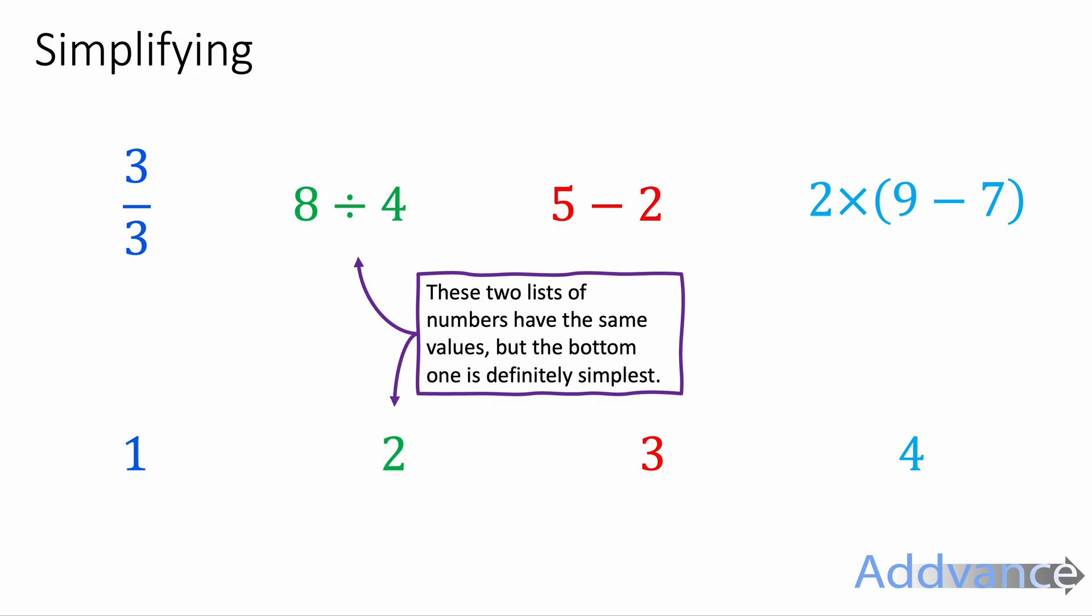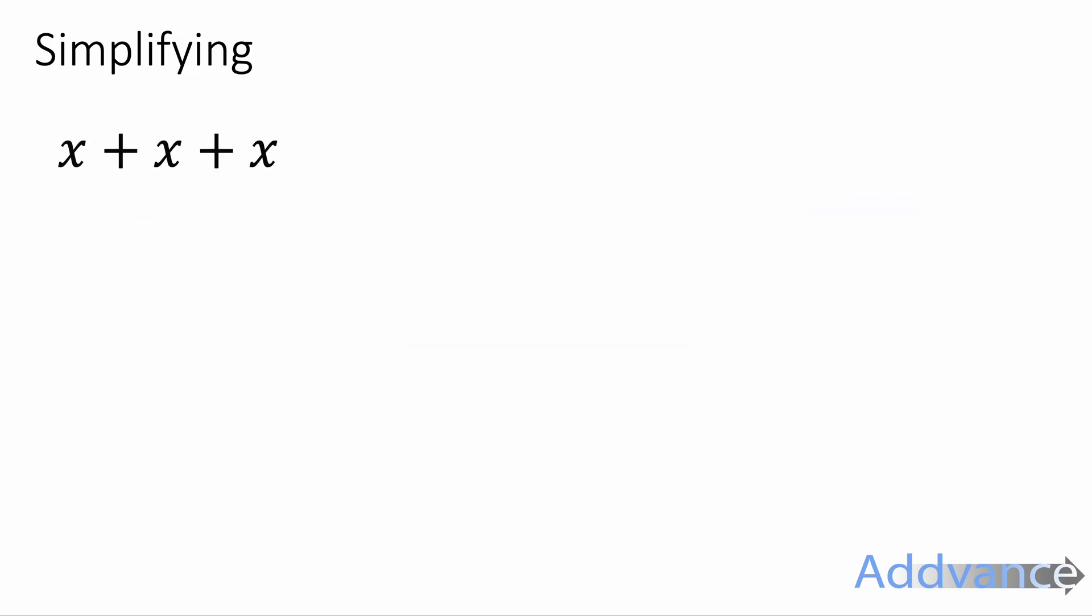We're going to be doing the exact same thing with algebra today. So we'll start with x plus x plus x. When you're adding three x's together, that's the same as three times x, written as 3x. In algebra we rarely write the times sign. Now 2a plus 5a minus 3a. Well, 2a plus 5a is 7a, then we subtract 3a. That is 4a.